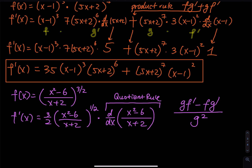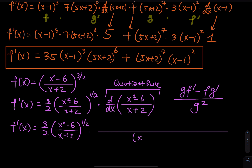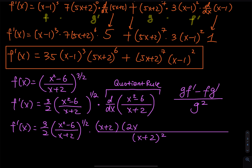So f prime of x — we copy the first piece. There's a lot of writing, you just have to be patient. x plus 2 raised to 1/2. For quotient rule, we need a long fraction bar. Square the denominator first: x plus 2 to the second power. And then x plus 2. The derivative of the numerator is 2x, because the derivative of 6 is 0. Then minus for the quotient rule, and then numerator x squared minus 6. The derivative of x plus 2 is just 1.